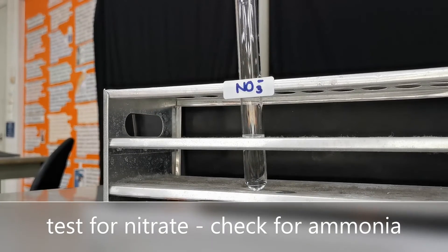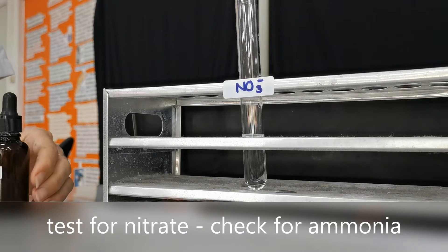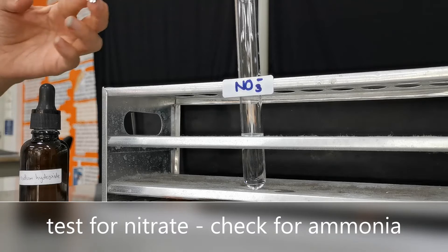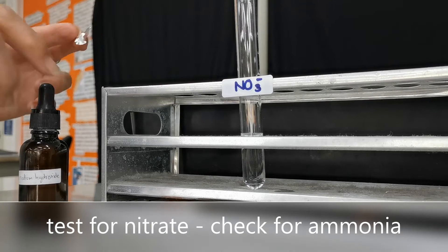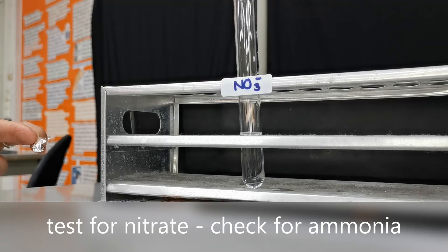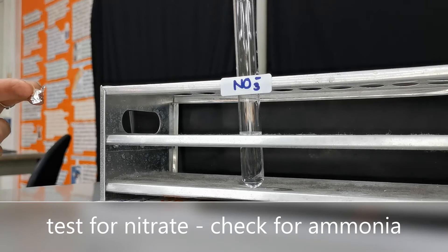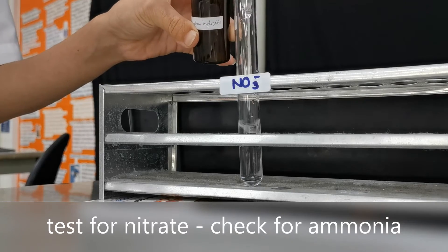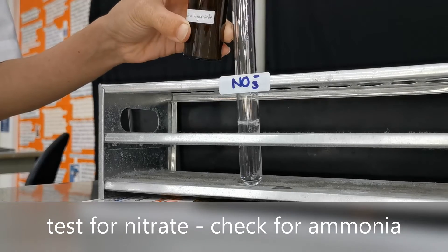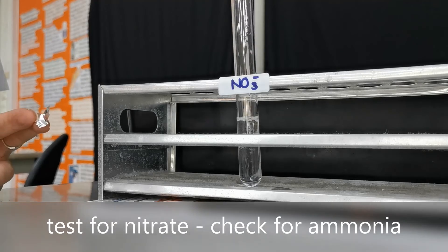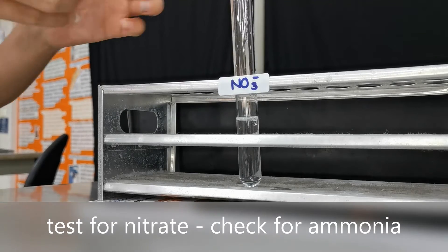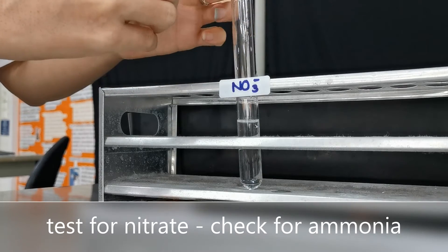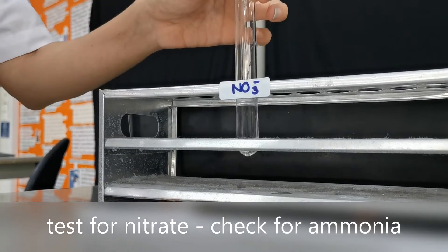The next ion is nitrate, and we're going to use sodium hydroxide and aluminum foil. When we heat up nitrate in the presence of aluminum foil and sodium hydroxide, it will create ammonia. So let's add some sodium hydroxide.